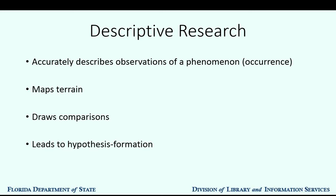Descriptive research seeks to provide an accurate description of observations of a phenomenon. The object of the collection of census data is to accurately describe basic information about a national population at a particular point in time. The objective of much descriptive research is to map the terrain of a specific phenomenon. A study of this type could start with questions such as, what similarities or contrasts exist between A and B — where A and B are different departments in the same public library, branches of the same regional library, or different types of libraries within Florida. Such descriptive comparisons can produce useful insights and lead to hypothesis formation.